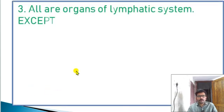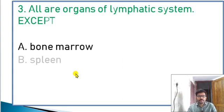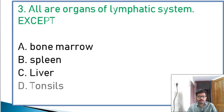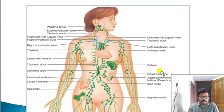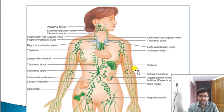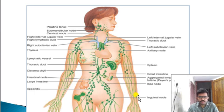Third question — all organs of the lymphatic system except: options — bone marrow, spleen, liver, tonsils. The correct answer is liver. Liver is not part of the lymphatic system. Organs of the lymphatic system include spleen, lymph nodes, thymus gland, iliac nodes, and inguinal nodes.